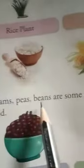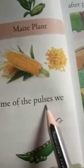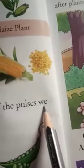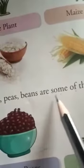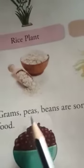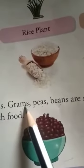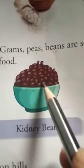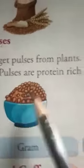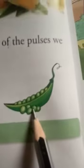We eat pulses — gram, peas, beans. Gram means chana, peas means mutter, beans means kidney beans. Okay.